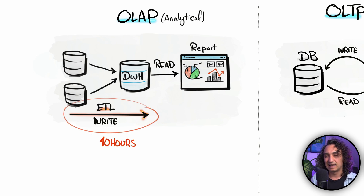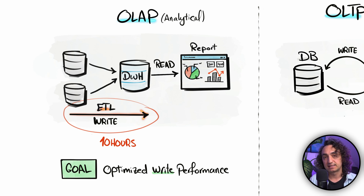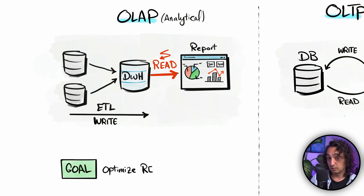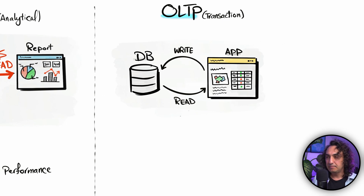For OLAP systems, you need to understand where the struggle is. Sometimes the ETL process itself is slow — writing data from sources into the data warehouse — and if it takes 10 hours every day, that is a problem. But most OLAP projects have an issue with read operations, because data warehouses have really big datasets and the front-end reports generate large, complex queries. So normally the big goal in each OLAP system is to optimize read performance.